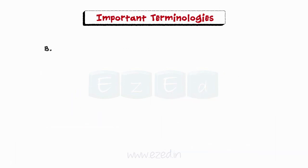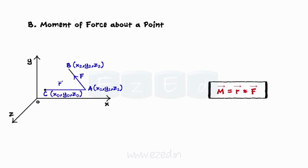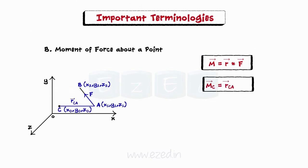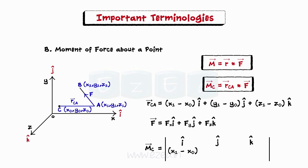Next, we will learn the method to find the moment of a force about a point. In a three-dimensional system, the moment of force is a vector given by R-bar cross F-bar, where R-bar is a vector from the point about which moment is calculated to any point on the line of action of the force. Consider a force of magnitude F acting from point A to B. The moment of this force about any point C is MC-bar equals R_CA-bar cross F-bar. We can express R_CA-bar in terms of unit vectors along X, Y, and Z axes, and find the moment using the determinant relating the components of R_CA-bar and F-bar.